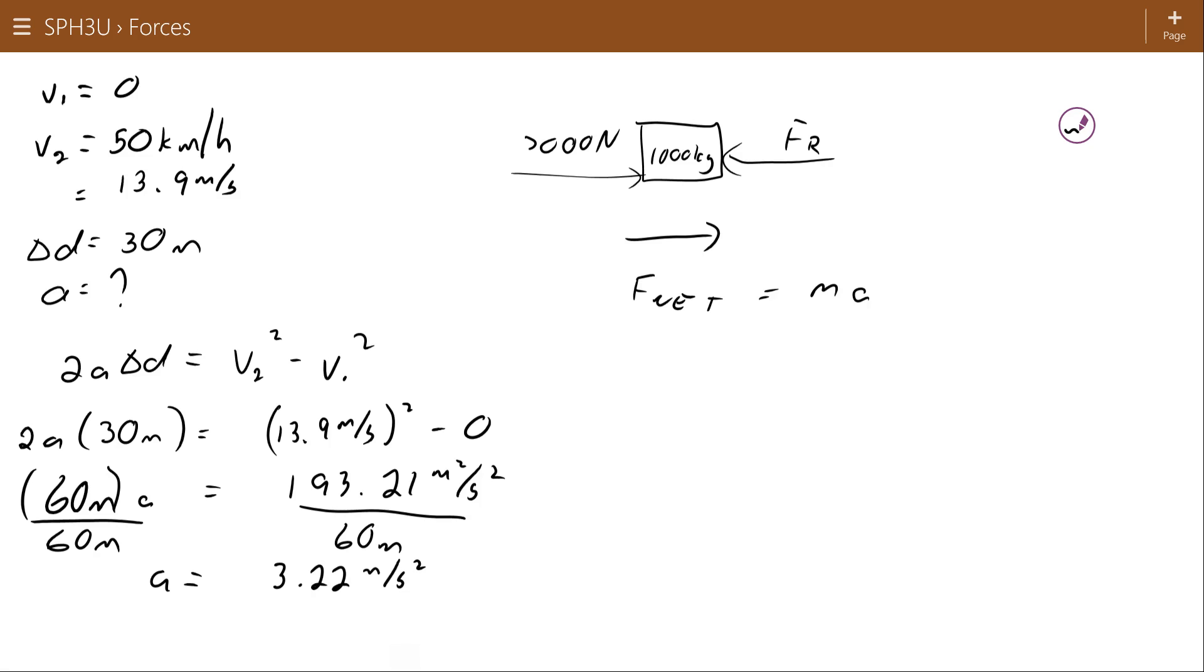3.22 meters per second squared. So to go from 0 to 50 over 30 meters, that's your acceleration. We can use that acceleration with Newton's second law now to find out what the net force would be. It's a thousand kilogram car with an acceleration of 3.22 meters per second squared. So that means that the net force is 3,220 Newtons.